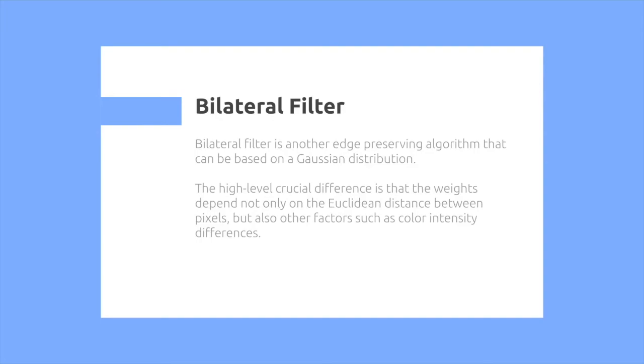The high-level crucial difference is that their weights depend not only on the Euclidean distance between pixels, but also on other factors such as color intensity differences.